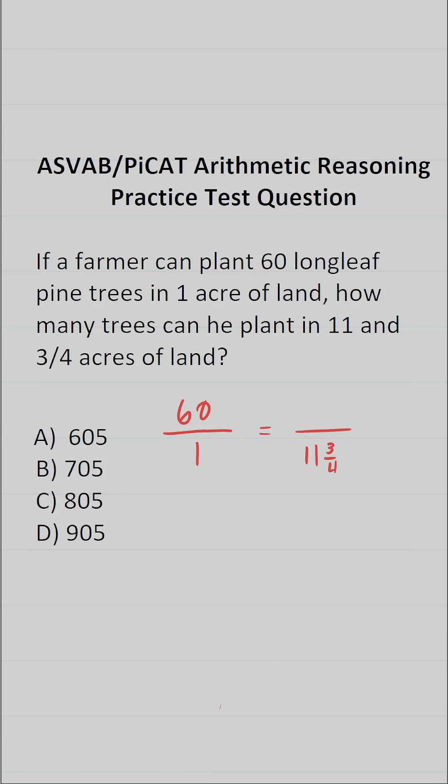And the number of trees he can plant is unknown. So let's call that X. To solve proportions, you use cross multiplication.